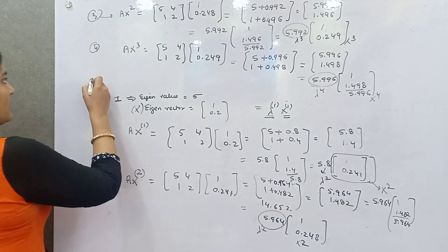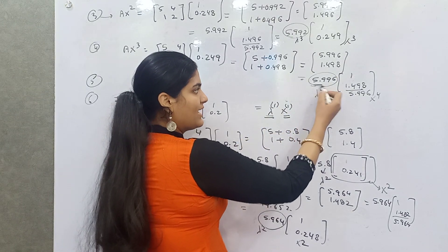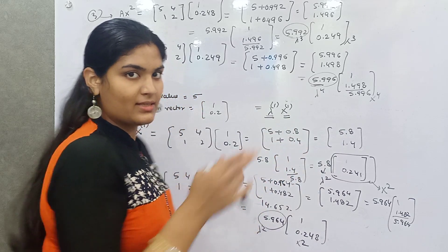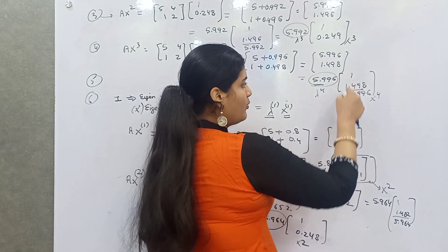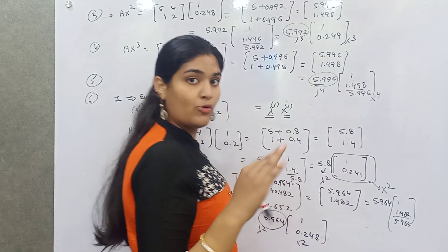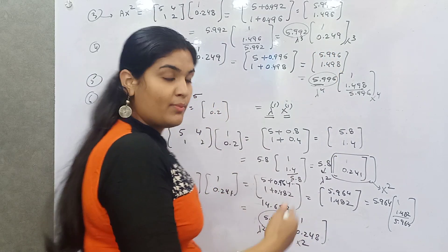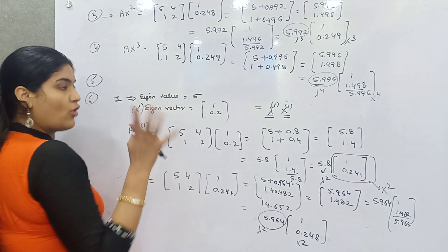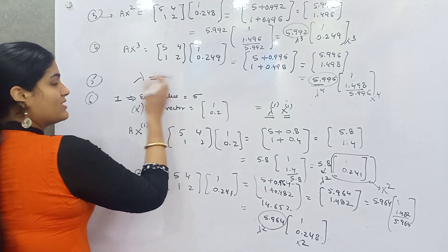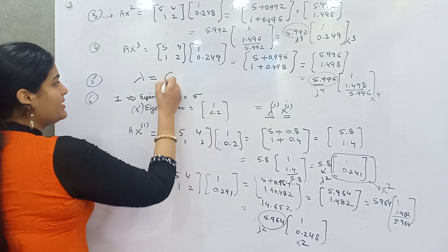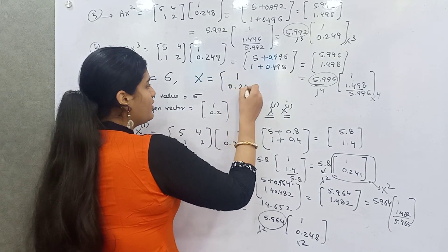Similarly, you can keep going 5th and 6th. You will see that 5.996, approximately 6. These values will be approximately 6 and this will be, if you take the round off, 0.25. You can see 0.25 here also. Because all of those values are common, you can take the highest value, largest value, which is lambda, the eigenvalue. Largest eigenvalue will be 6 and largest eigenvector will be [1; 0.25].